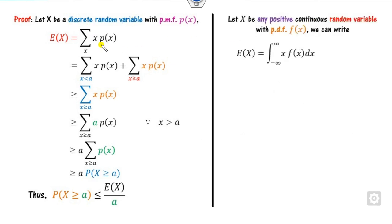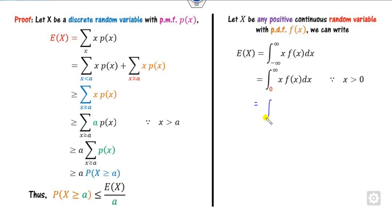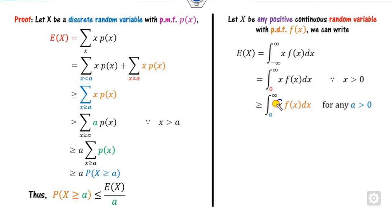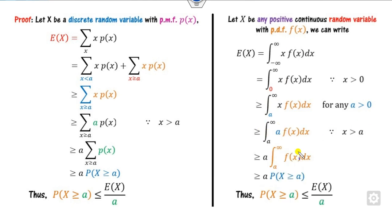If you want to find the continuous case, simply replace the summation sign with integration. Since X is positive, you can break the integral from 0 to A and from A to infinity. The part from minus infinity to 0 cancels out. The sum of the two portions is always greater than each individual quantity, and substituting X ≥ A with A as a constant taken outside gives the simple proof of Markov inequality.